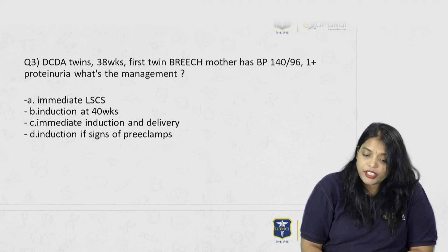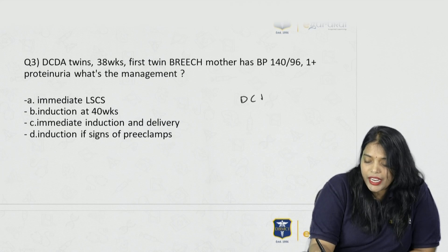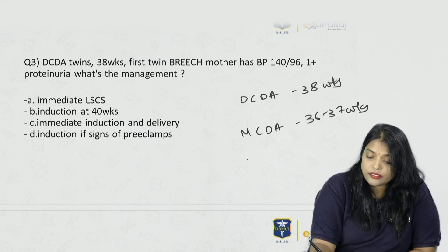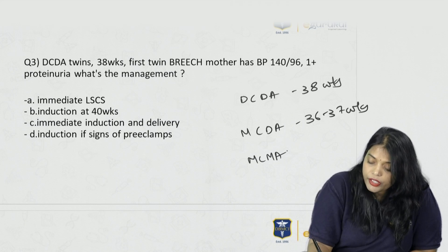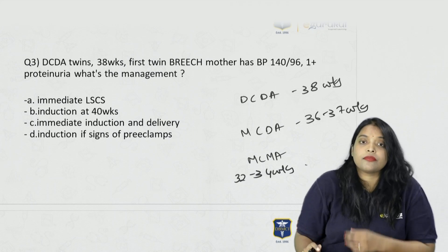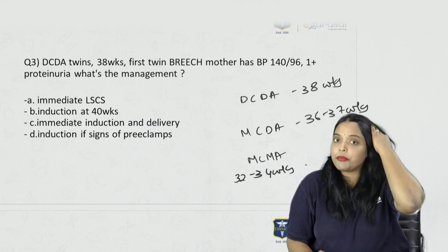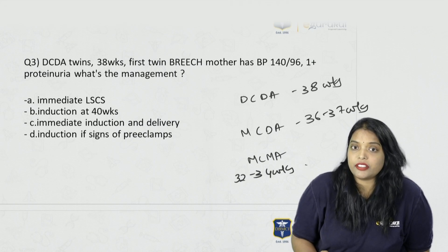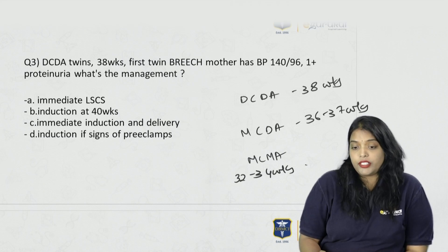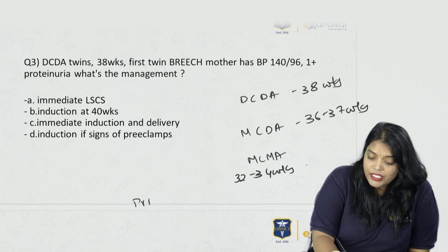Dichorionic diamniotic twins can normally be delivered by 37–38 weeks. Monochorionic diamniotic: 36–37 weeks. Monochorionic monoamniotic: deliver by 32–34 weeks. Dichorionic diamniotic and triplets are delivered by 35 weeks, after giving steroids.